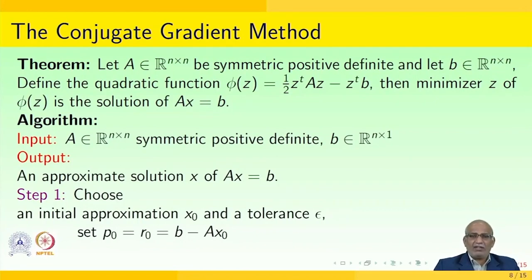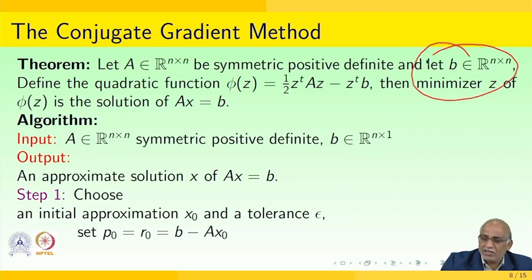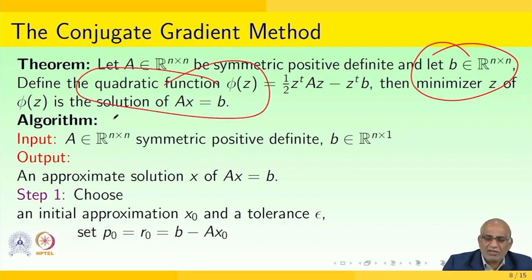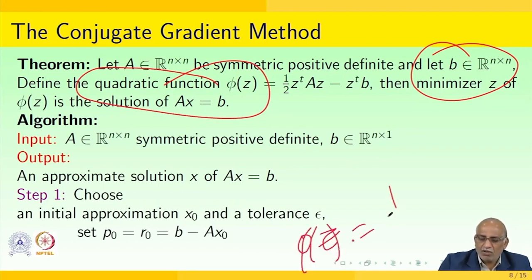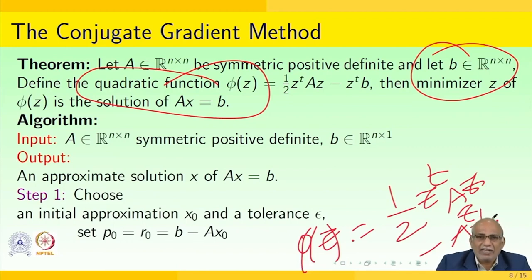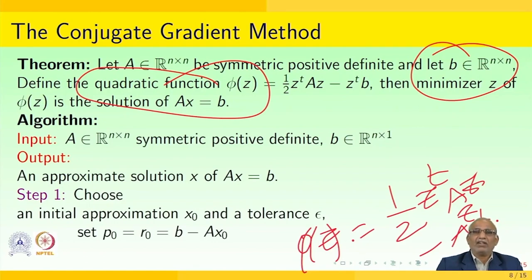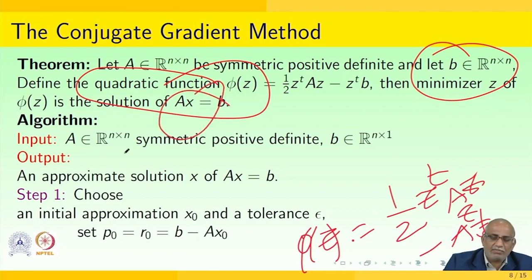The conjugate gradient method can be described as follows. Let A ∈ ℝ^(n×n) be symmetric positive definite and B ∈ ℝ^n. Define the quadratic form φ(z) = ½·z^T·A·z − z^T·b. Then the minimizer of φ(z) is the solution of the equation Ax = b. So minimizing φ(z) gives us the solution to the linear system.